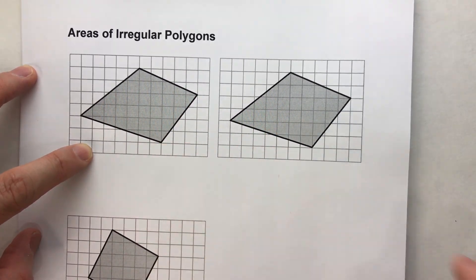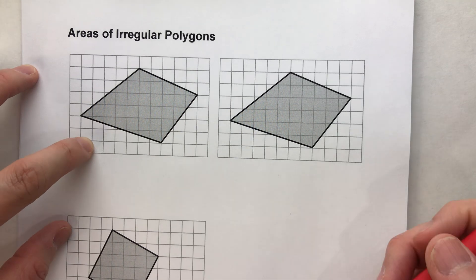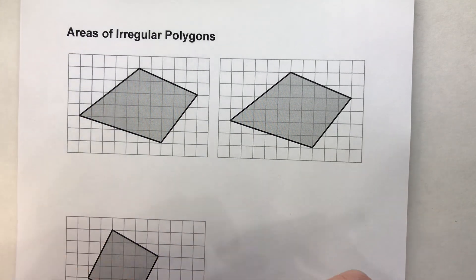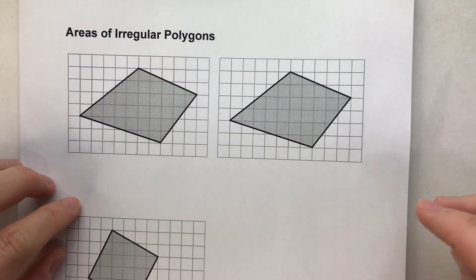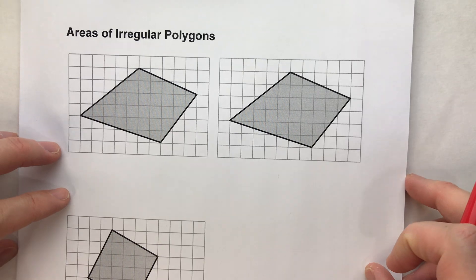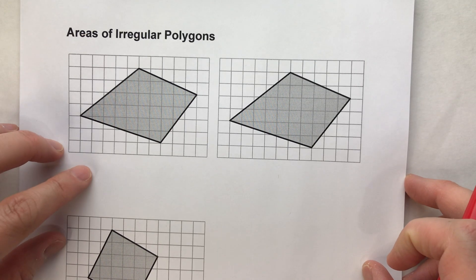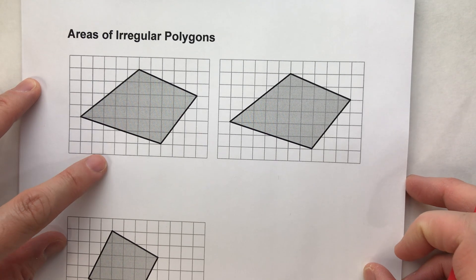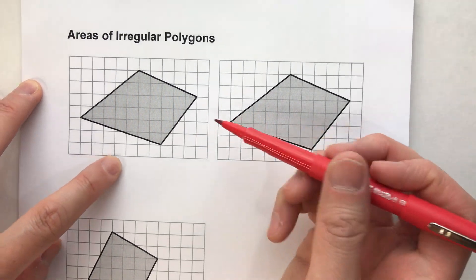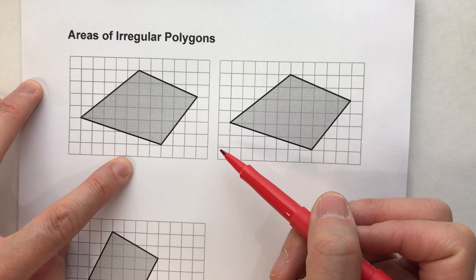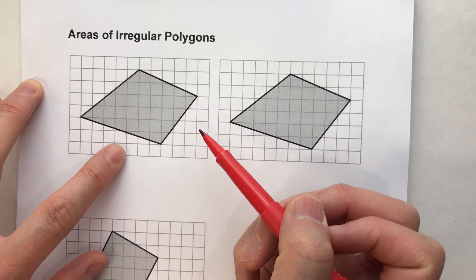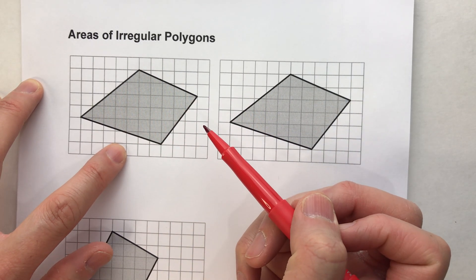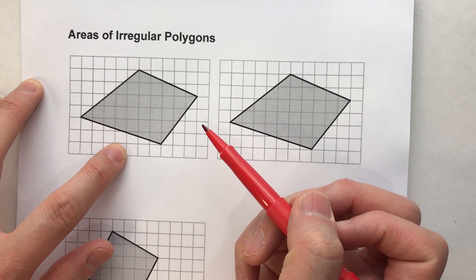I'm going to show you two different methods to find the area of it. It just depends on which one you prefer, which one you can visualize better. The first method I'm going to show you is to cut it up into right triangles.